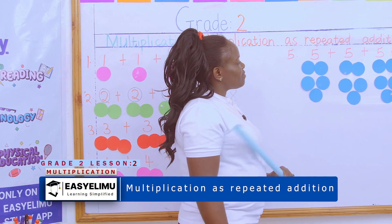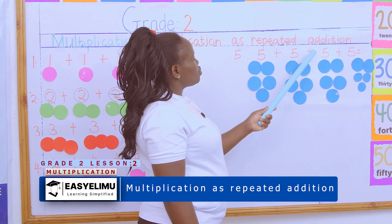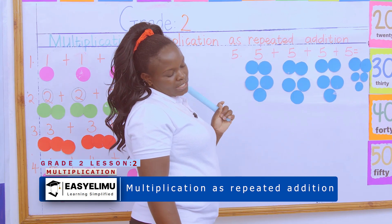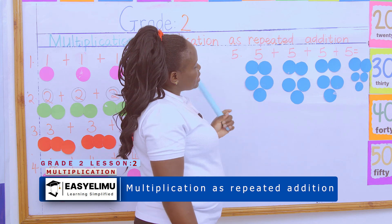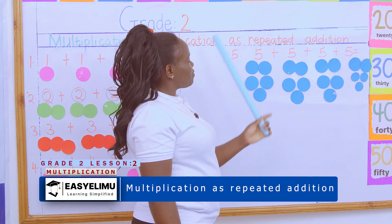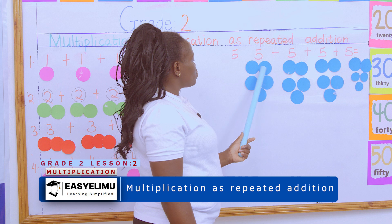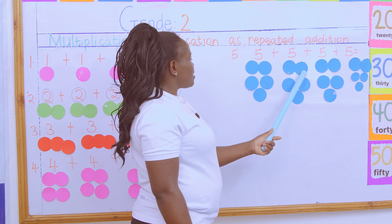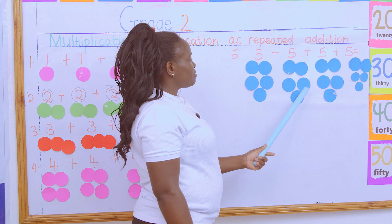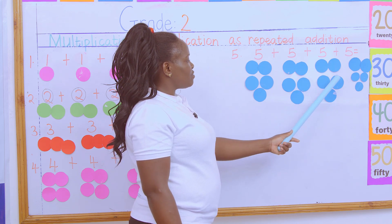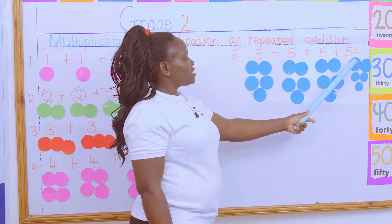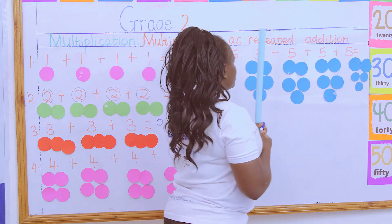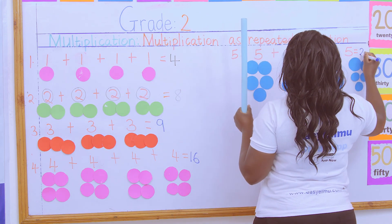How many times does five appear? One, two, three, four. And what is the sum of five plus five plus five plus five? We count one through twenty. The sum is twenty.